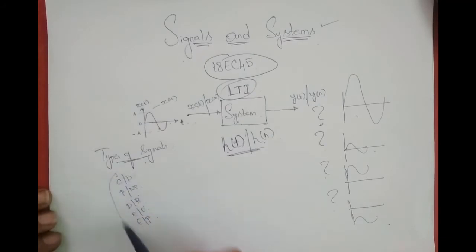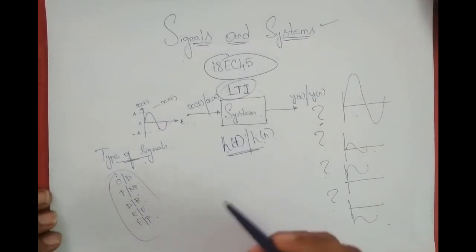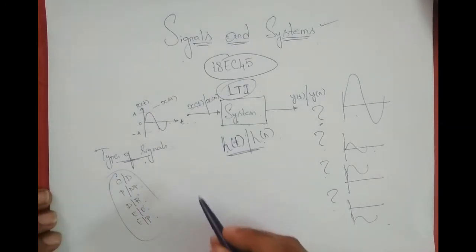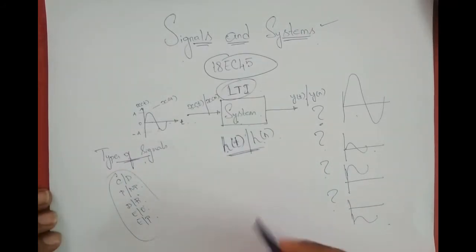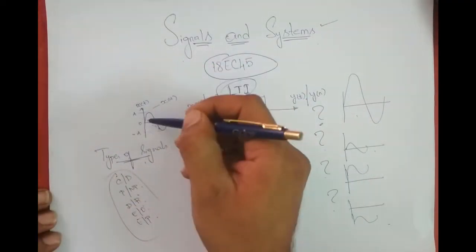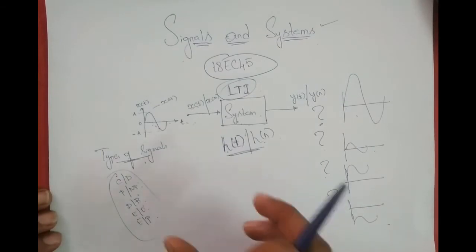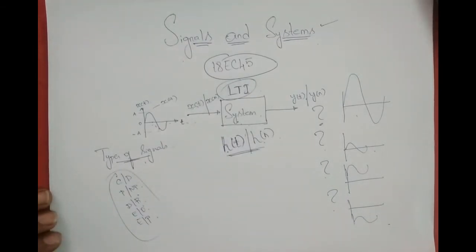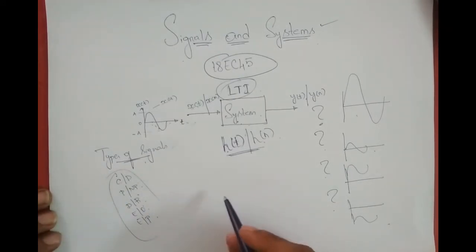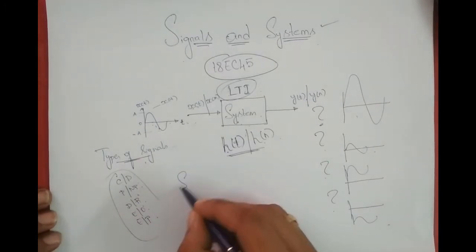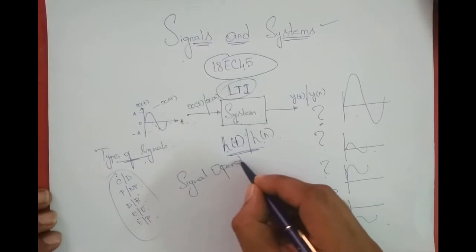Given a signal, you should be able to recognize what type of signal it is. After that, we will perform basic mathematical operations on signals: adding two signals, multiplying two signals, subtracting amplitudes, shifting the signal right or left, scaling it up or down, and offsetting it up or down. We can also perform shifting and scaling operations together, which we call the precedence rule. All these mathematical operations will be covered in detail.